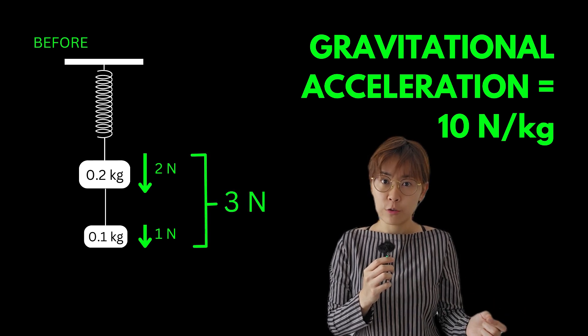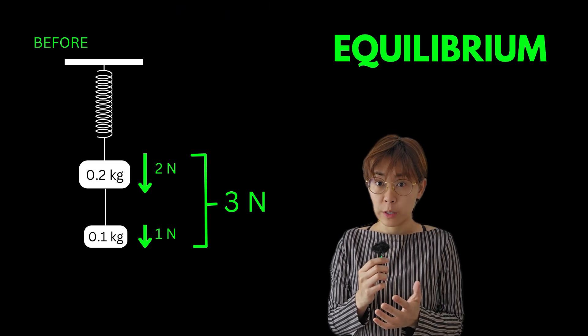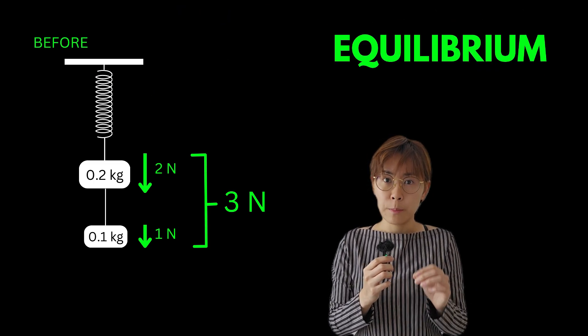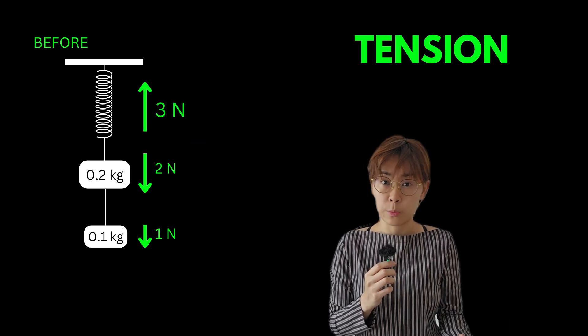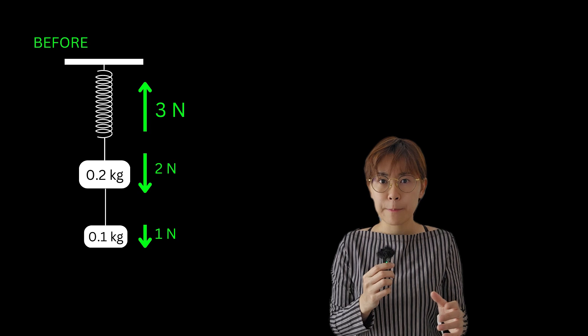Since the system is in equilibrium, there's an equal but upward force balancing this. The 3 newtons force comes from the tension in the spring. Now let's imagine what happens when we cut the thread to drop the 0.1 kilogram mass.